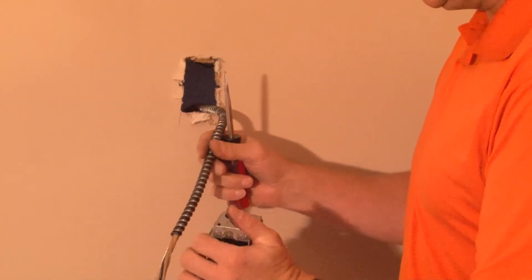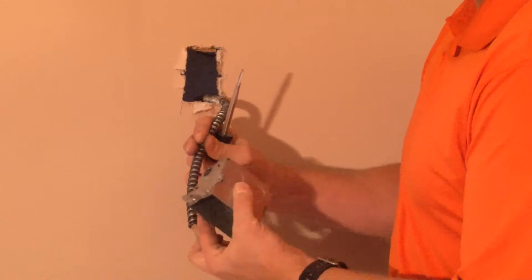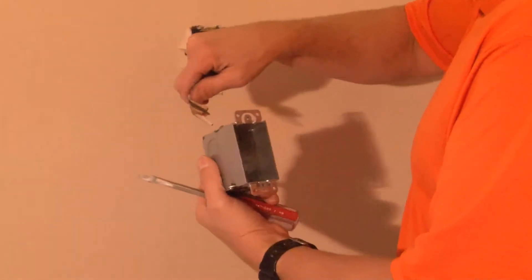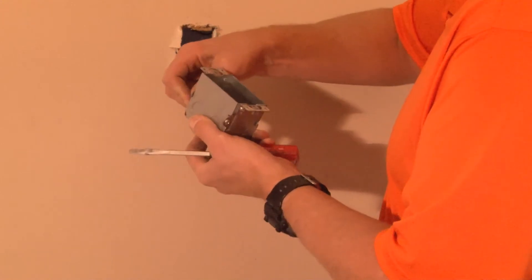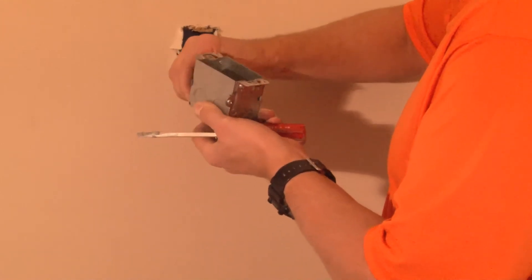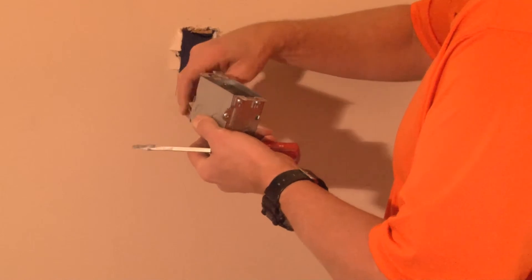As you can see, it's very easy to remove. This now allows the installer to insert the cable directly through that opening without the need for external connectors that get in the way of the box.